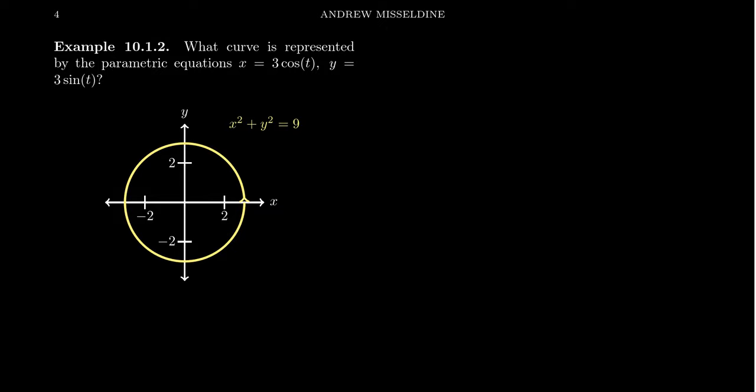Welcome back. In the previous video, we saw that we can parameterize a parabola using a parameter t — x equals something, y equals something — using parametric equations. Can we do it for the other conic sections, like circles, hyperbolas, ellipses, and such?